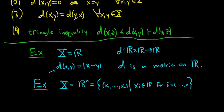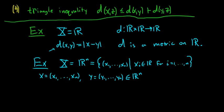What would the metric be here? You would take two n-tuples: X = (x₁, ..., xₙ) and Y = (y₁, ..., yₙ). So you have two n-tuples in ℝⁿ, in n-dimensional space. Then you define the metric as follows.